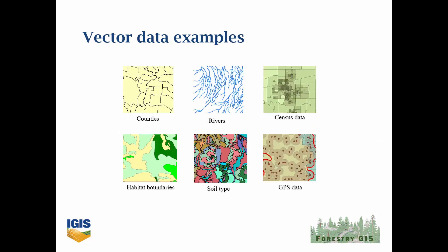Some common examples of vector data include administrative boundaries such as counties, where we know the coordinates of the corners and nodes and can easily string them together to make polygons. Rivers and roads — or at least their center lines — are likewise easily encoded as a series of connected dots. Census data are typically recorded in blocks or tracts, which are well-defined polygons with demographic numbers attached. Habitat boundaries and soil types reflect properties that often vary continuously, but biologists and soil scientists have come up with categories that get saved as polygons. Finally, any data collected with a GPS recorder is probably going to be saved as a set of points.